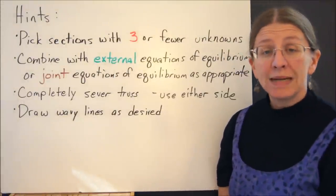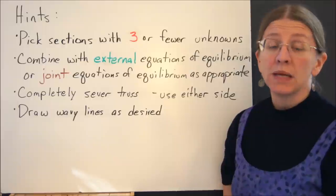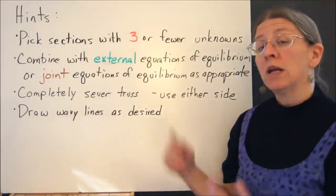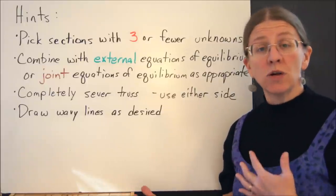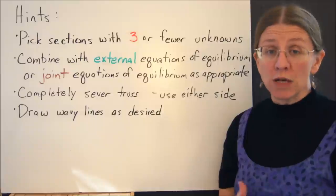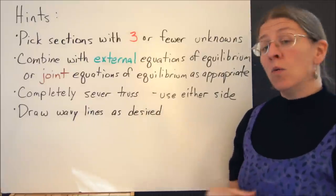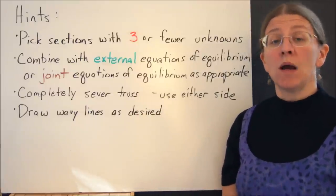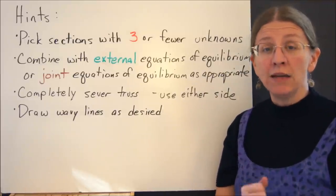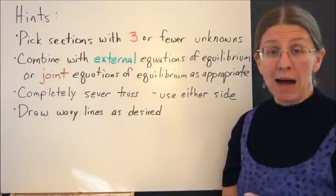A couple hints: Pick sections that only have three unknowns, because then you can solve for everything that happens in them. You can combine, just like we just did, external equations of equilibrium with equations of equilibrium that come from your truss sections, or with equations of equilibrium that come from your joints. It doesn't really matter how you get your equations. Any of them are valid, and they can be combined as you wish.